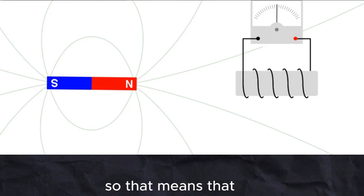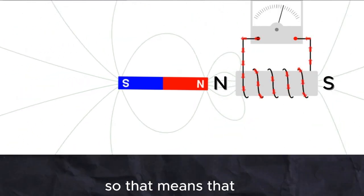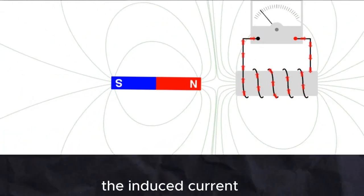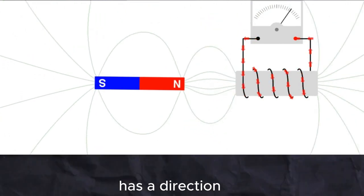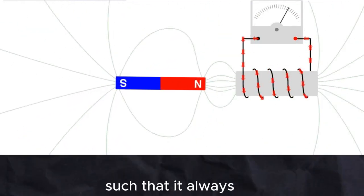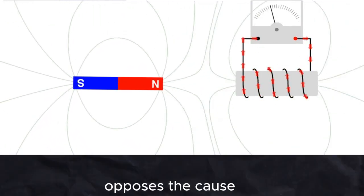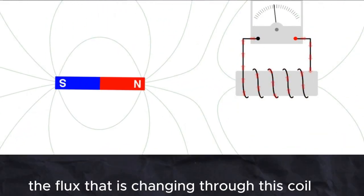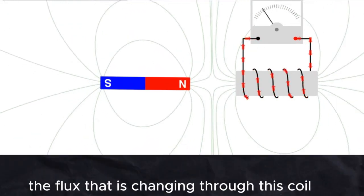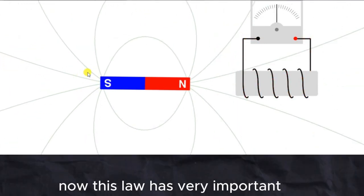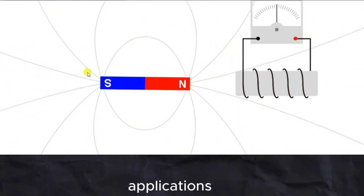According to Lenz's Law, the induced current has a direction such that it always opposes the cause, and the cause is actually the flux that is changing through the coil.